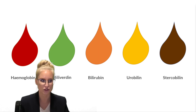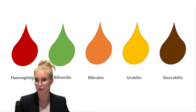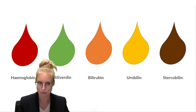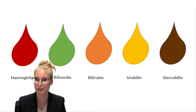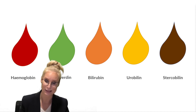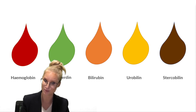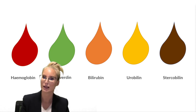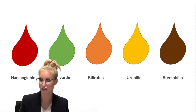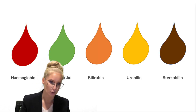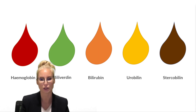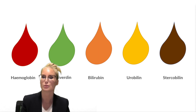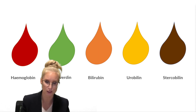When bile full of biliverdin and bilirubin goes into the gut, gut bacteria break down the bilirubin into bilinogen, which is clear, and that becomes oxidised or further broken down into urobilin and stercobilin. Urobilin is yellow and water-soluble — some is reabsorbed into the blood, which gives serum a yellowish tinge, and it's eventually excreted through the kidneys, which is why urine is yellow. Stercobilin gives faeces its colour, so pale clay-coloured stools suggest a liver problem, insufficient bile production, or a blockage along one of the ducts.